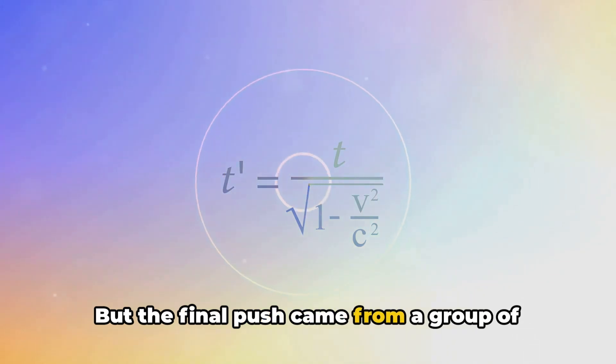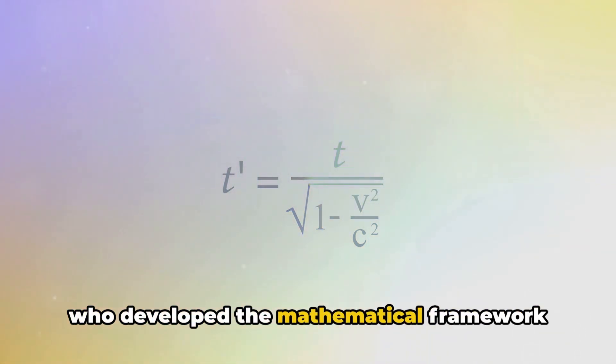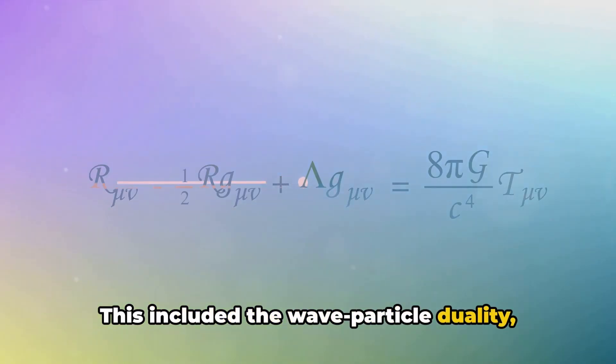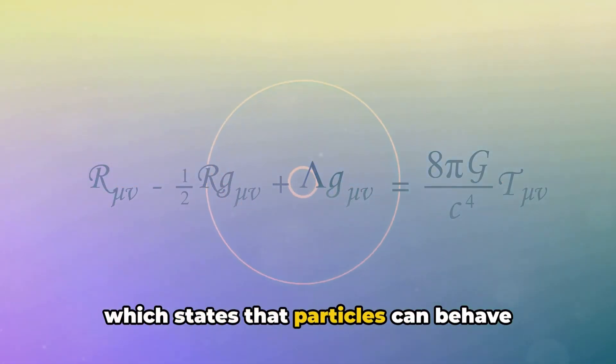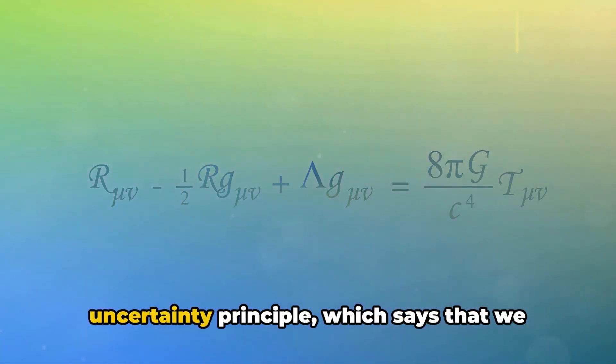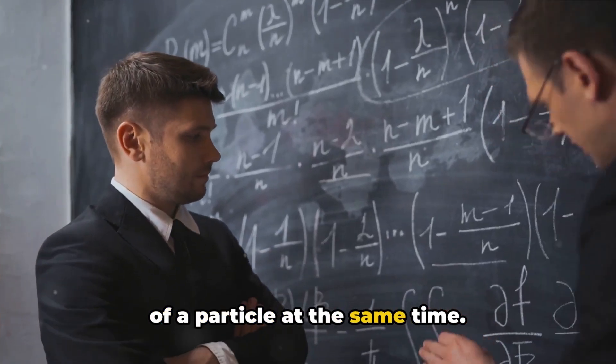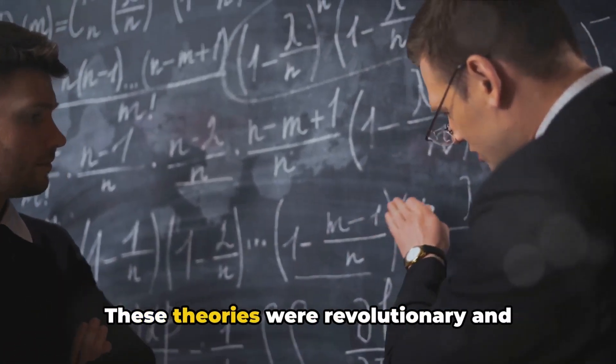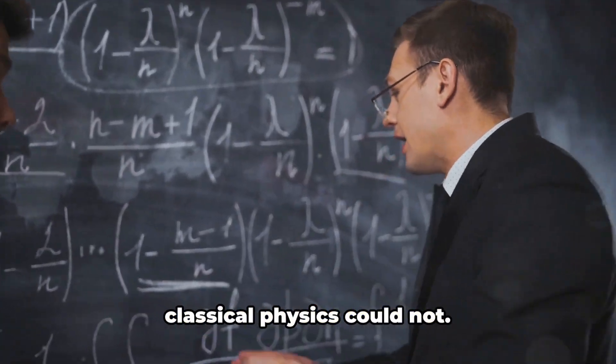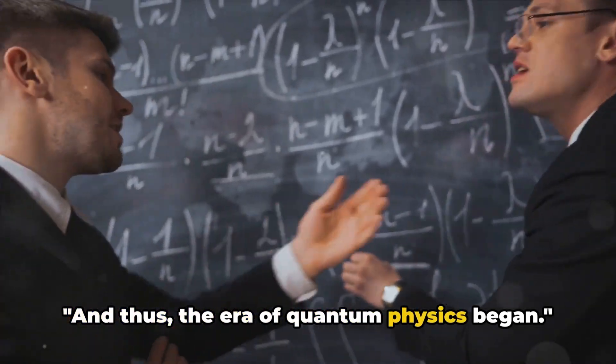But the final push came from a group of young physicists in the 1920s who developed the mathematical framework of quantum mechanics. This included the wave-particle duality, which states that particles can behave both as particles and waves, and the uncertainty principle, which says that we can't know both the position and momentum of a particle at the same time. These theories were revolutionary and controversial, but they worked. They could explain phenomena that classical physics could not. And thus, the era of quantum physics began.